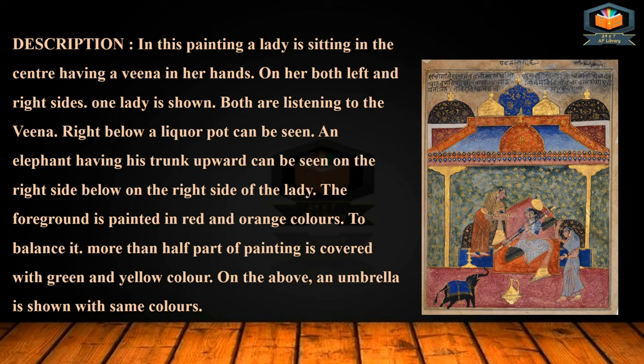Right below, a liquor pot can be seen. An elephant with its trunk raised upward can be seen on the right side below. The foreground is painted in red and orange colors. To balance it, more than half the part of the painting is covered with green and yellow color above, and an umbrella is shown with the same colors.